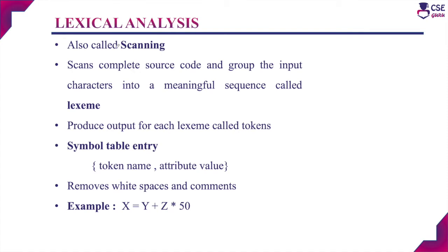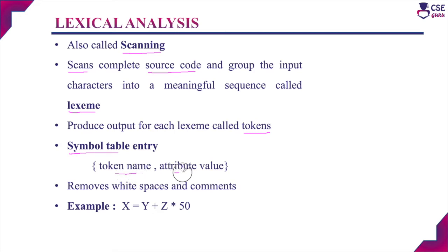The first phase of the compiler is lexical analysis, also called scanning. The source program is given as input and the lexical analyzer scans the complete source program, grouping input characters into meaningful sequences called lexemes. These lexemes are compared with patterns to produce output as tokens. The lexical analyzer also collects information about the source program and stores it in the symbol table, which consists of two entries: token name and attribute value. Token names may be identifier names or subroutine names, and attribute values are data type, scope, and return type of subroutines.